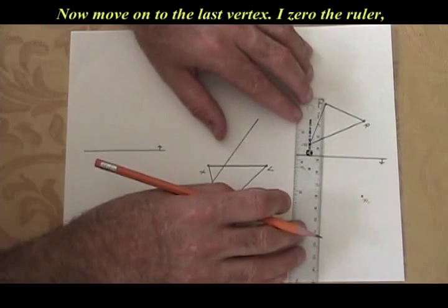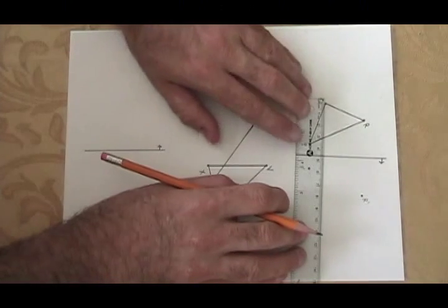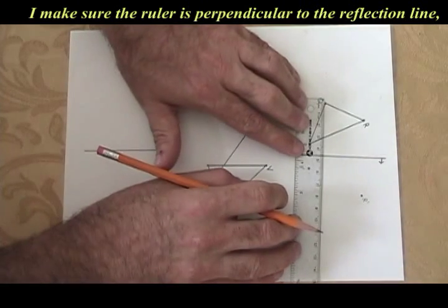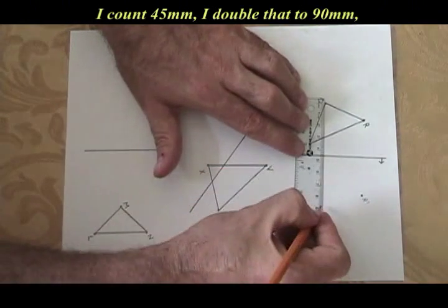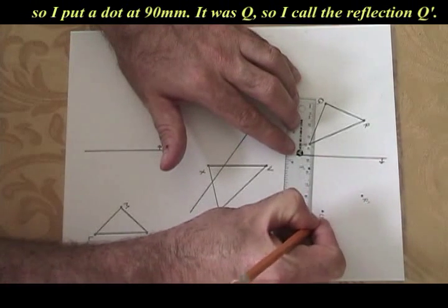Now I'm on the last vertex. I zero the ruler. I make sure the edge of the ruler is perpendicular to the reflection line. I count 45 millimeters. I double that to 90, so I put a dot at 90 millimeters. It was Q, so this is Q'.